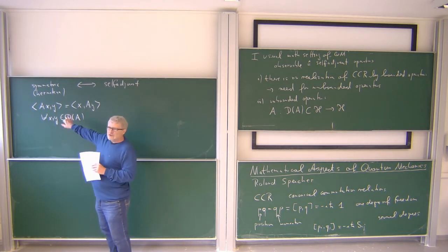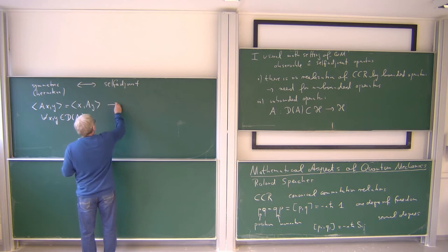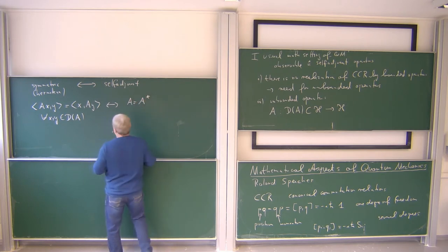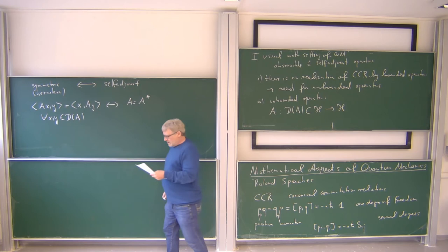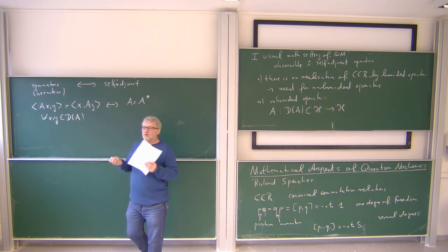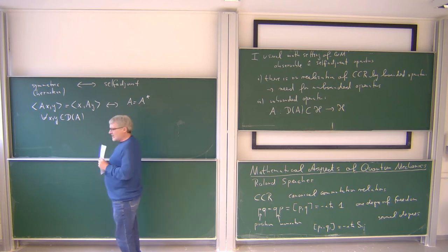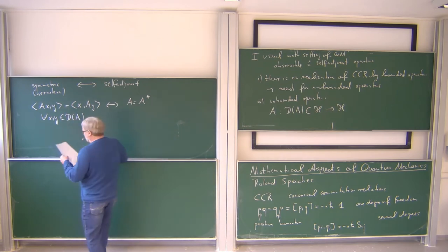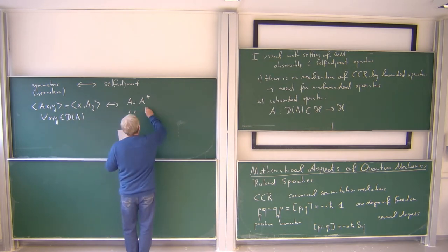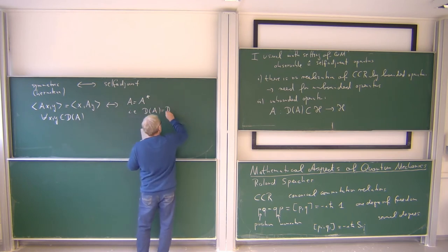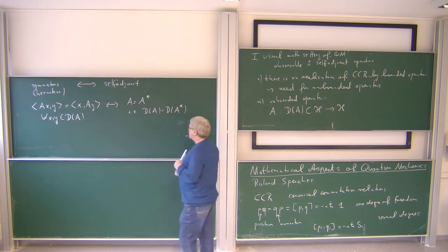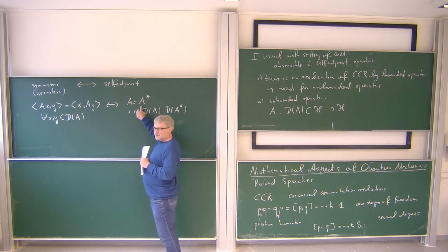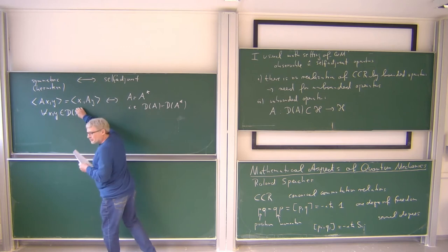Symmetric is a quite weak condition. What we really want is self-adjoint, and this is more. Self-adjoint requires that A is equal to its adjoint A*, and this is more because the adjoint comes with its own domain. The requirement that A equals A* means the domain of A* has to be the same as the domain of A. This is much stronger than the symmetry condition alone.